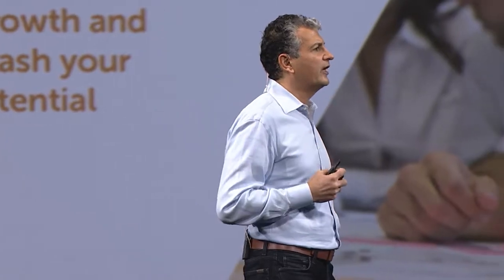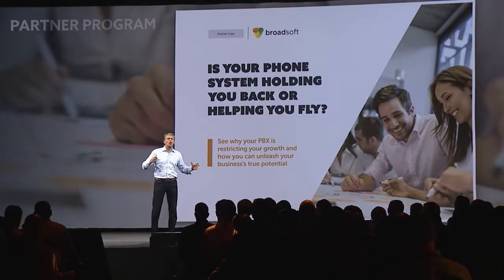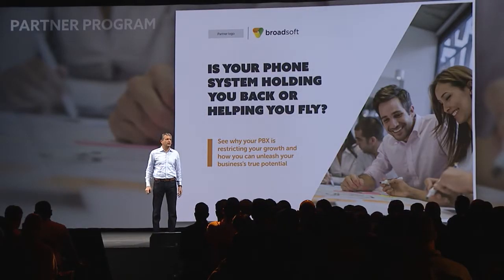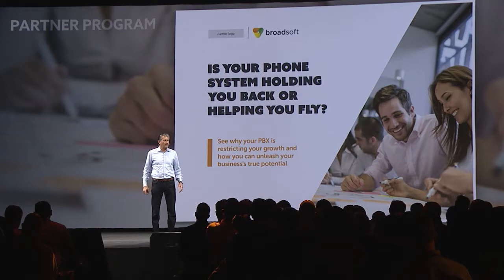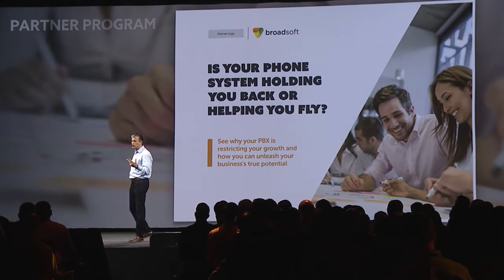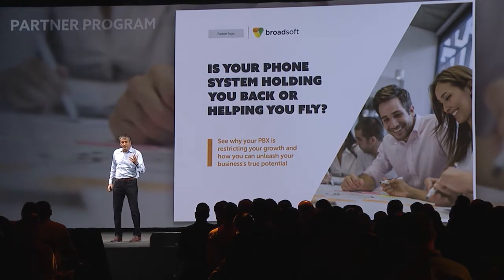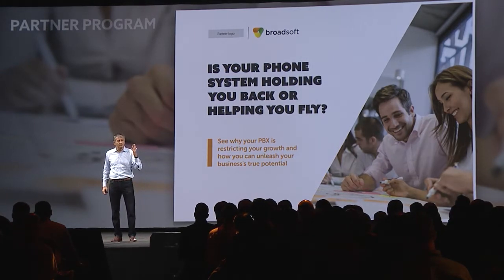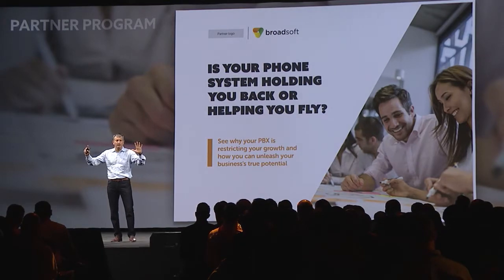The way this works is we set objectives together. Let's say we want to go and generate 5,000 new leads on UC. We figure out the various different channels that we want to roll this through — social, search, email, mail, blogs, video — and we roll it out on our digital marketing platform.